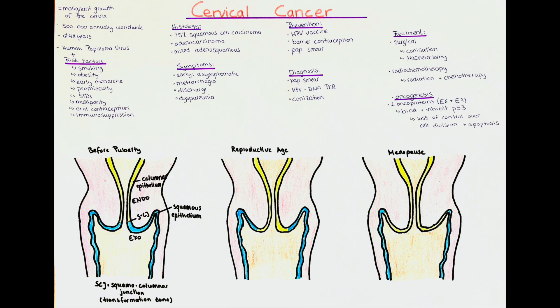E6 and E7 oncoproteins from high-risk HPV strains — HPV16 and HPV18 — give rise to cervical cancer. While E6 and E7 from low-risk strains lead to the formation of benign warts; those strains are mainly HPV6 and HPV11.